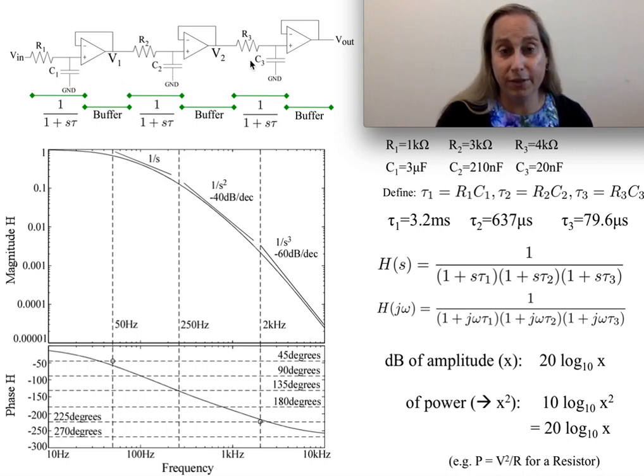And in fact, if I have particular values of R1, R2, and R3, like I have over here, I can actually define that I'll have three time constants, R1 C1, R2 C2, and R3 C3. And in so doing, I can go ahead and calculate those time constants, and those actually turn out to correspond to frequencies roughly 50 hertz, 250 hertz, and 2 kilohertz.